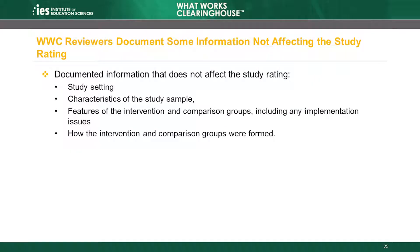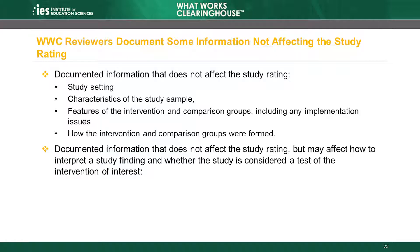The WWC also documents information about a study that will not affect that study's rating. The WWC documents the study setting, characteristics of the study sample, features of the intervention and comparison groups — including any implementation issues — and how the intervention and comparison groups were formed. In addition, the WWC documents certain common issues that can affect how to interpret a study finding, including non-participation, contamination, and lack of fidelity.